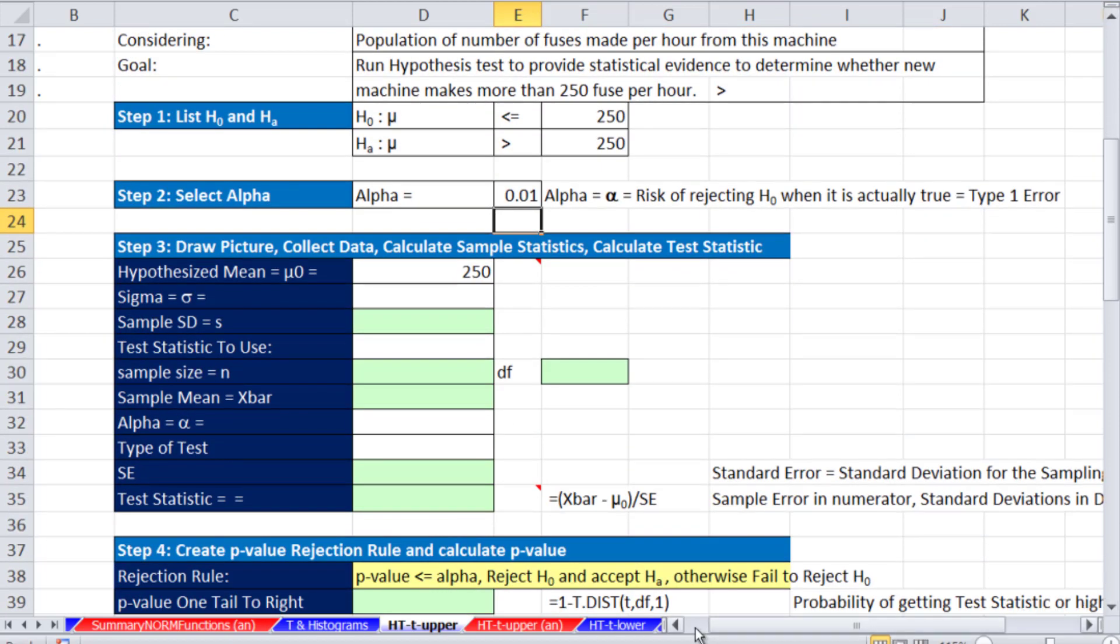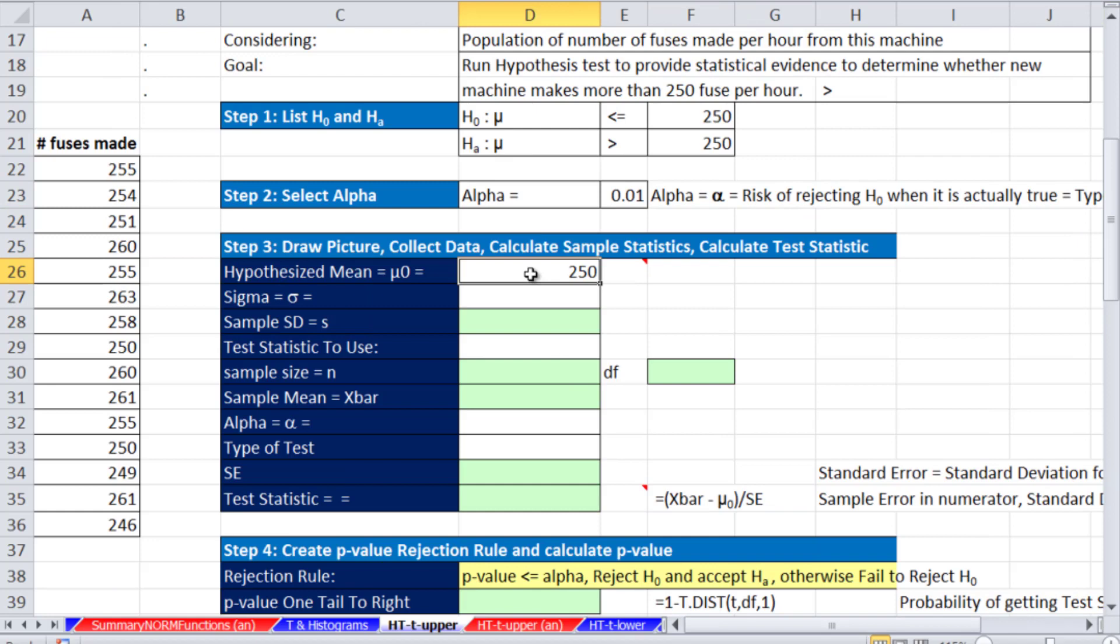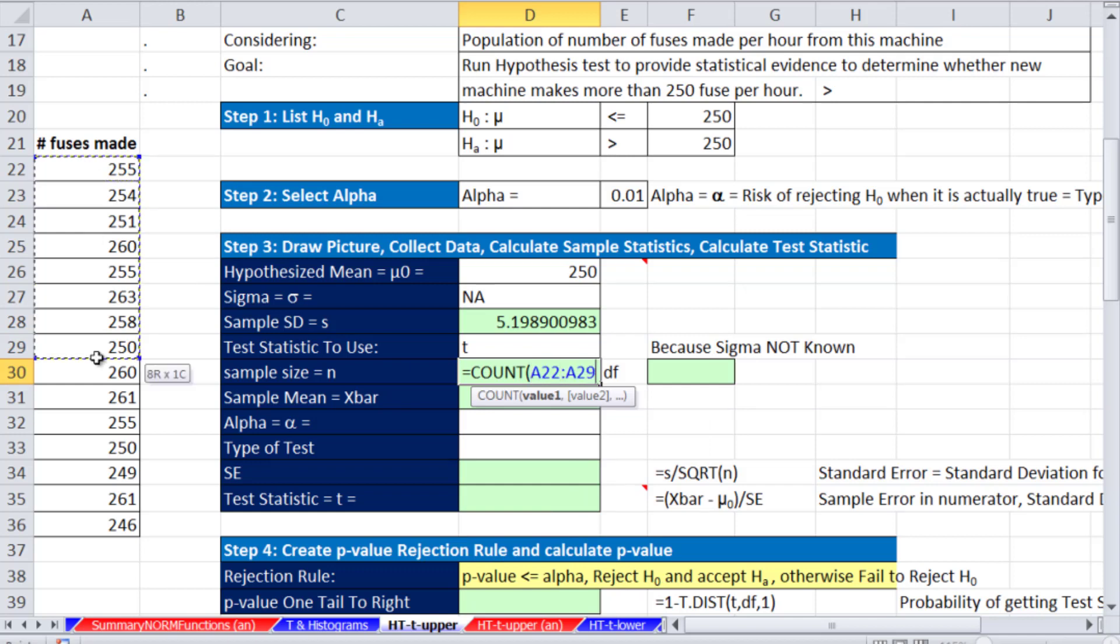Let's go down and make some calculations. I'm going to scroll over just a bit here. So, we have our hypothesized mean of 250. Sigma, we don't know it. It's not available. This is a new machine. Our sample standard deviation, we'll use STDEV.S. So, we get 5.19. Statistic to use, we are going to use t because we don't know sigma. Sample size, we're going to use the count function. For t, we have to calculate our degrees of freedom, n minus one. Degrees of freedom is used to determine which of the many t distributions you're going to use. The smaller the sample size, the more spread out and variation there is in the t distribution. We'll take our sample mean.